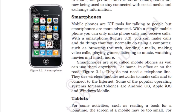Next is the smartphone. Mobile phones are ICT tools for talking to people, but smartphones are more advanced. With a simple mobile or feature phone, you can only make and receive calls. A simple phone, which you might have at your home, is only capable of making calls.